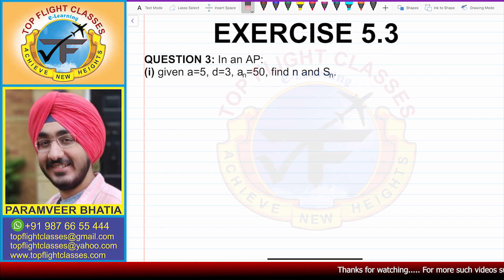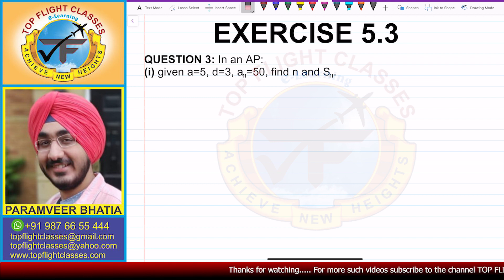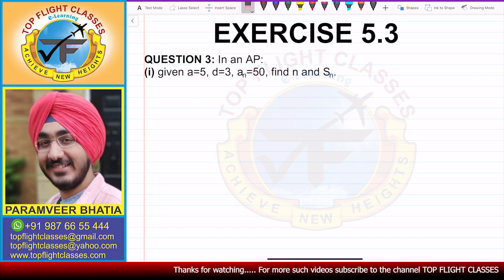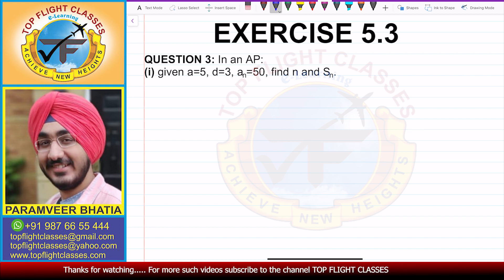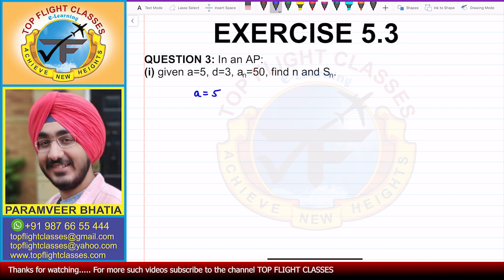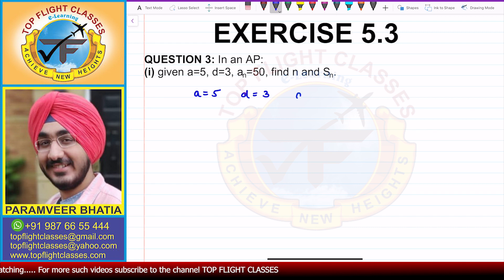Question No. 3 says: In an AP, given A is equal to 5, D is equal to 3, An is equal to 50. We have to find N and S of N. So in this question, A is equal to 5, D is 3, and An is 50.